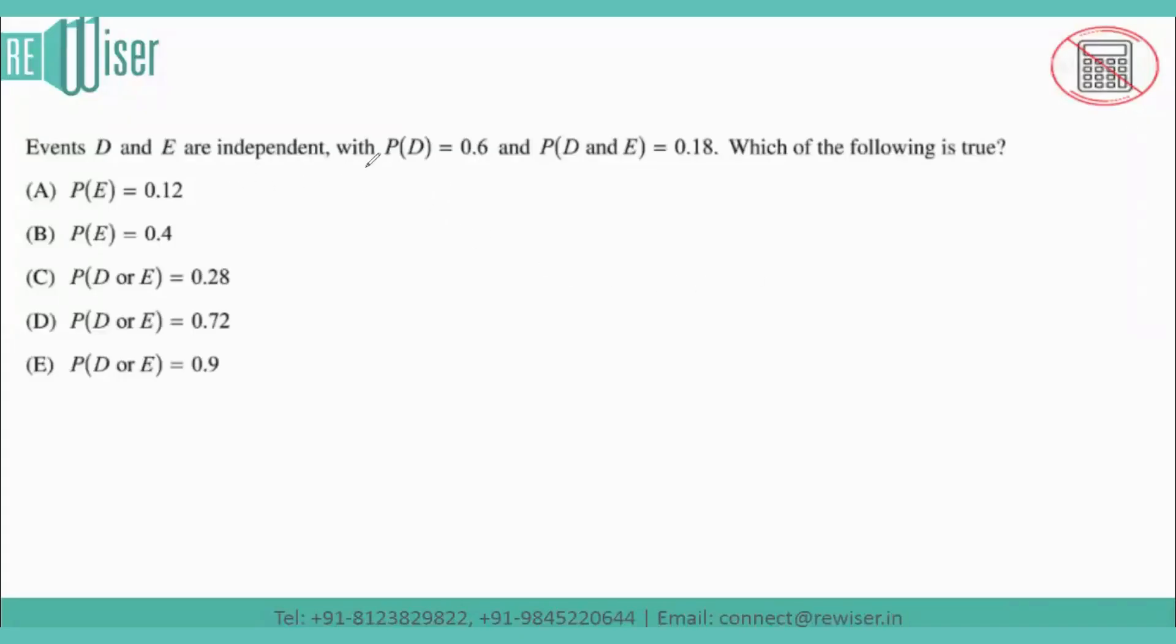Hello students. Events D and E are independent with the probability of D of 0.6 and the intersection of D and E is 0.18. So which of the following statements is true?